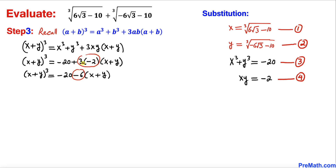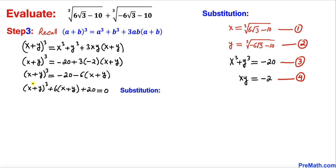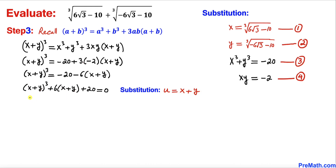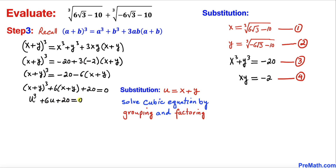To simplify further, we substitute u = x + y wherever we see x + y. Moving everything to the left-hand side, our equation becomes u³ + 6u + 20 = 0. This is a cubic equation which we will solve by grouping and factoring.